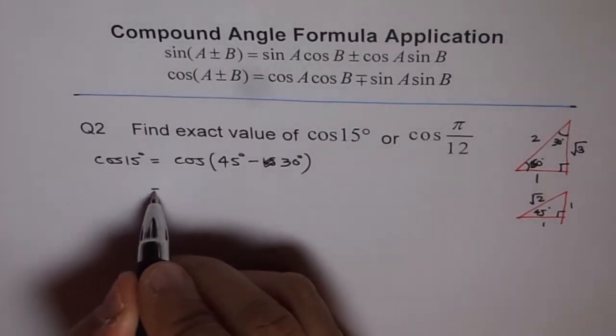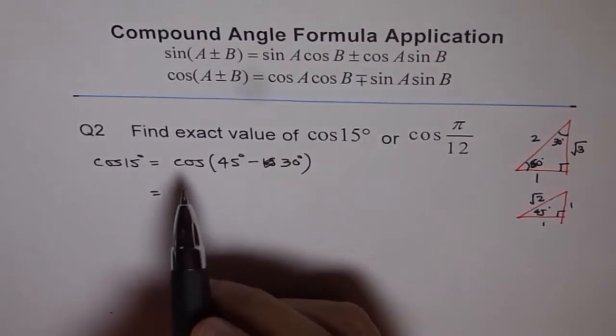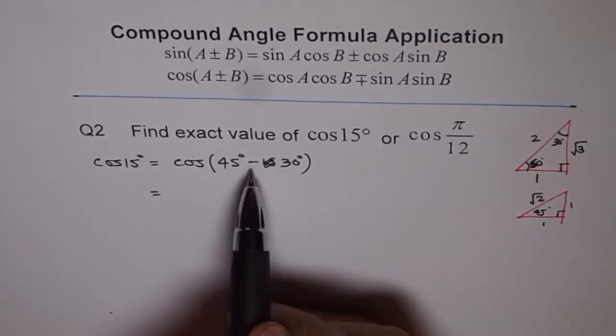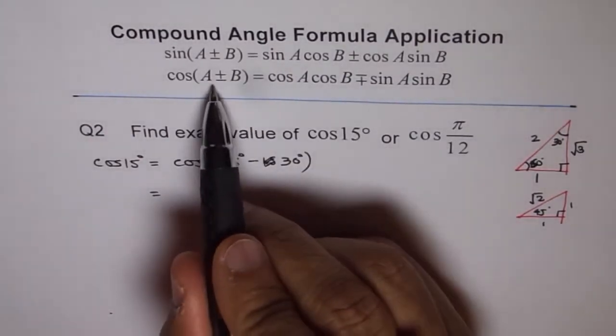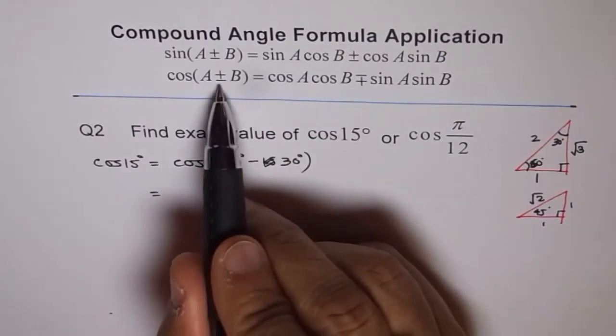Use this formula to expand cos of 45 degree minus 30 degree. So cos A minus B is cos A cos B plus sin A sin B. Remember this sign is kind of reversed. If you are doing plus, this is minus. If you do minus it is plus.